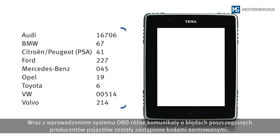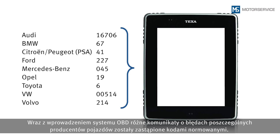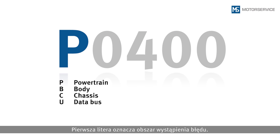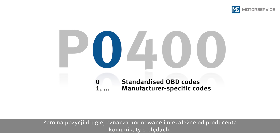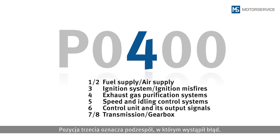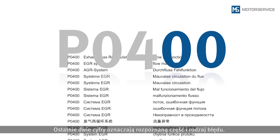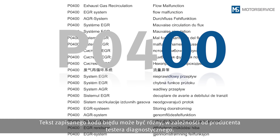With the introduction of OBD, the various DTCs used by individual vehicle manufacturers for just one error were replaced by standardized DTCs. The first letter indicates the area where the error occurred — errors on emission control components are indicated by a P for powertrain. A zero in the second position indicates standardized DTCs independent of the manufacturer. The third position indicates the assembly group, and the last two digits identify the detected component and type of error. The wording of DTC text may vary depending on the scan tool manufacturer.